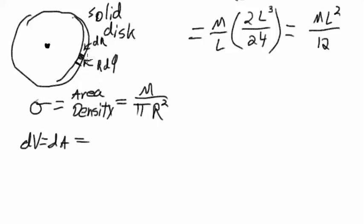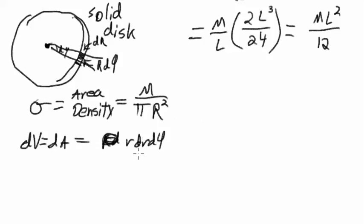This element gets bigger as you go out from the center — the further out you are, it's multiplied by R, and then by the angle d-phi. Multiplying those two sides together, we'll have r dr d-phi, where lowercase r is changing and capital R is the constant. Then we'll use the integral of rho dV times r squared — density times the volume element times r squared.